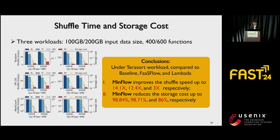The figure shows the shuffle time and storage cost of several workloads in different configurations. Under the Terasort workload, compared to baseline, FastFlow, and Lambda, Mean Flow improves shuffle speed up to 14.1 times, 12.4 times, and 3 times respectively. Mean Flow reduces storage cost up to 98.84%, 98.31%, and 86% respectively.